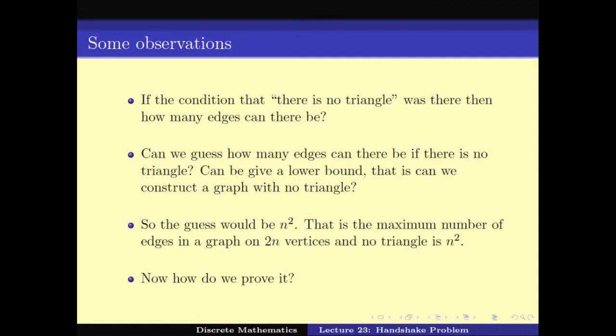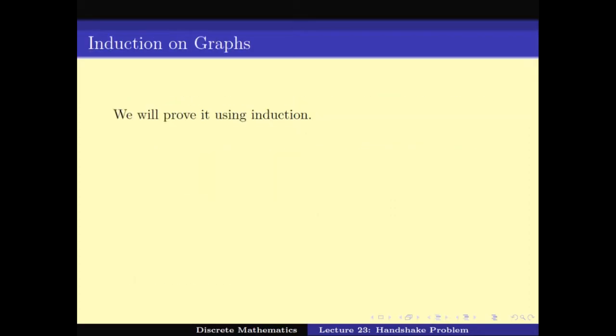So we get a triangle-free graph on 2N vertices with N² edges. Hence we guessed that N² is possibly the maximum, and in fact that is what we should be trying to prove — that N² is the maximum and it can be attained. The question is how do you prove that statement? To prove it, we will be using induction on N. Note that the number of vertices in the graph is 2N.